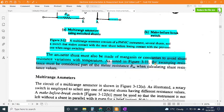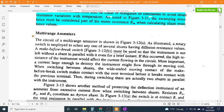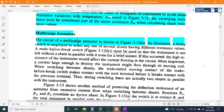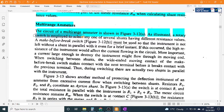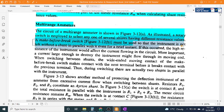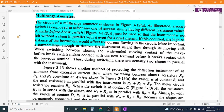Multi-range ammeter is shown in Figure 3-12A. As illustrated, a rotary switch is employed to select any one of several shunts having different resistance values. A make-before-break switch, Figure 3-12B, must be used so that the instrument is not left without a shunt in parallel with it even for a brief instant. If this occurred, the high resistance of the instrument would affect the current flowing in the circuit.